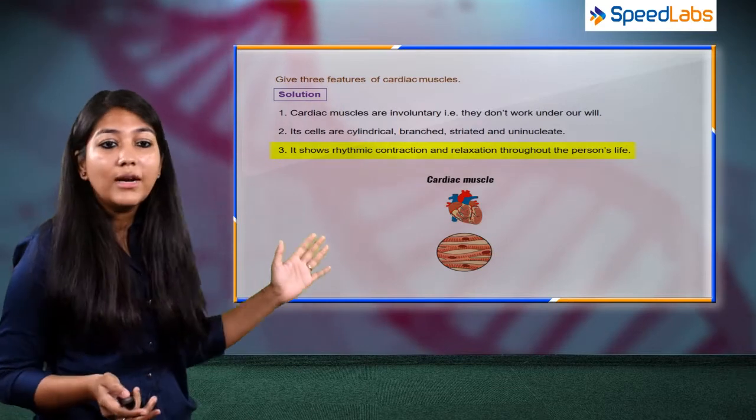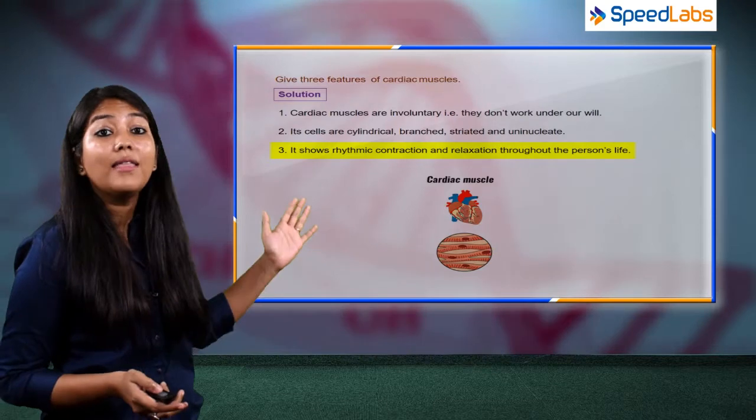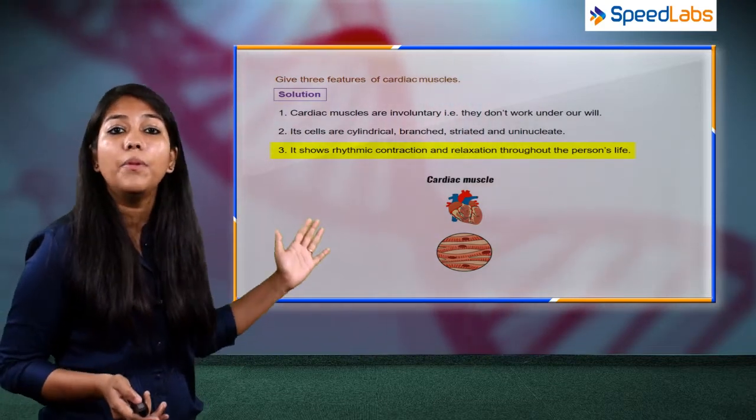So now here is the picture of the cardiac muscles. We all can relate that they are cylindrical in nature, they are striated, and they are uninucleated and branched.